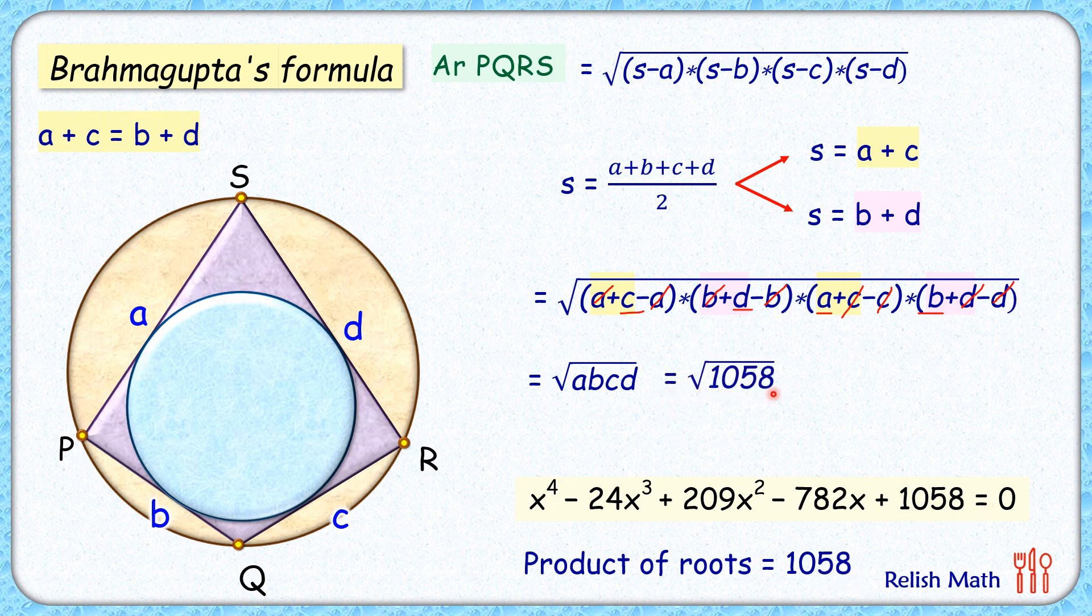Putting this value, we get the area as square root of 1058, which simplifies to 2√13 square centimeters.